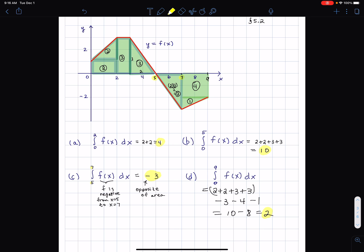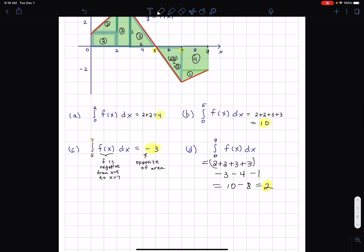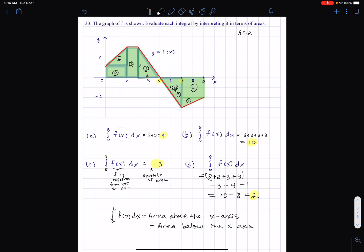Again, we subtract what's below and add what's above the x-axis. So the integral from a to b of f(x) dx is equal to the area above the x-axis minus the area below the x-axis. By itself that statement doesn't quite make sense, but in the context of everything we're talking about, I think that's a pretty good statement.